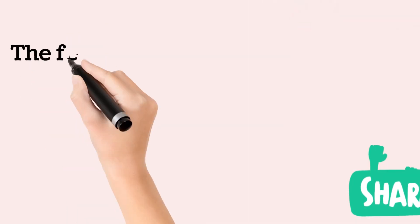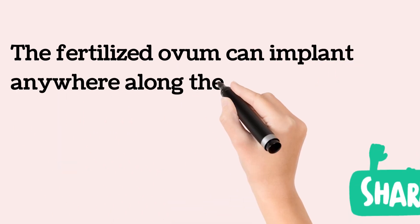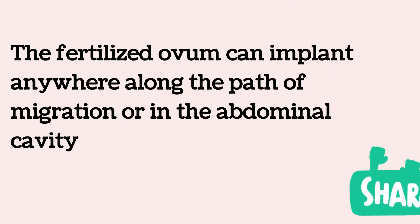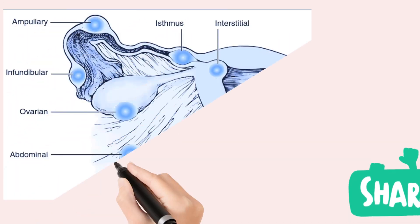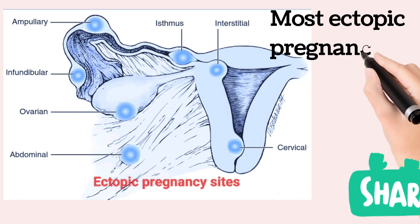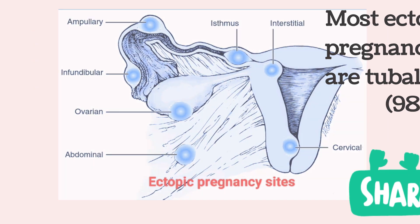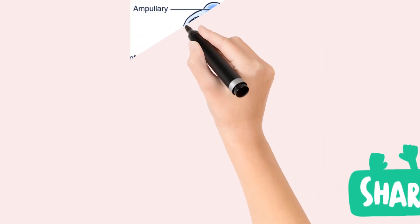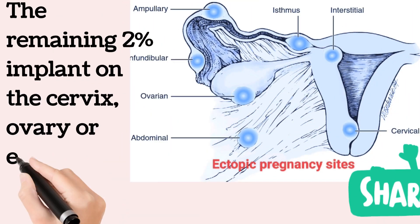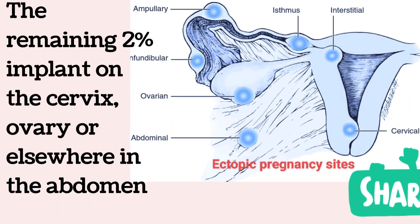The fertilized ovum can implant anywhere along the path of migration or in the abdominal cavity. Most ectopic pregnancies are tubal in 98% of cases, and the remaining 2% implant on the cervix, ovary, or elsewhere in the abdomen.